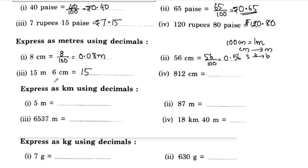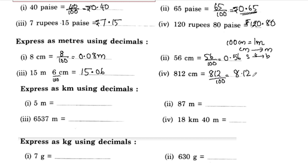This is 6 by 100. 6 by 100 is equal to 0.06, so this is 15.06. If you look at this, 6 cm is equal to 2 digits — it is equal to 0.06. This is 812 cm. 812 by 100 is equal to 8.12 m.